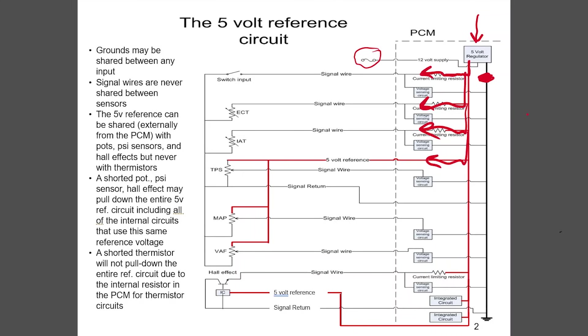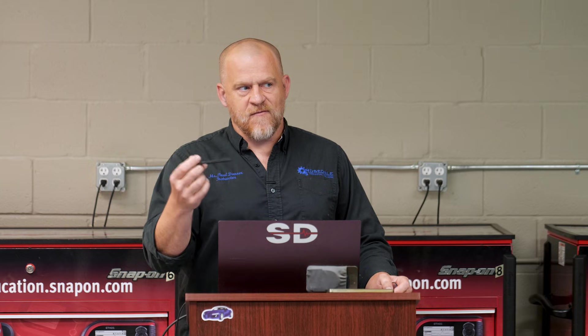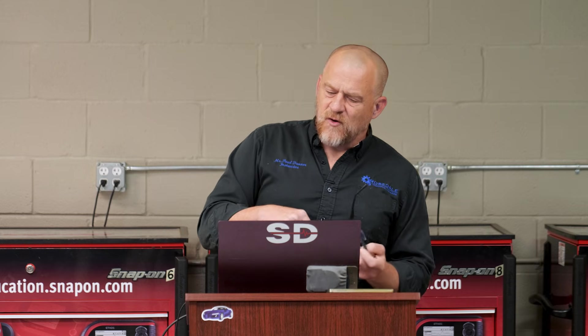Where does that regulator get grounded? It grounds to the board. Where does the board get grounded? It grounds to the block. There would be a main board ground that comes out and grounds externally to the block. I highly recommend watching my chapter 9 playlist — I've taught every single page of the book. Chapter 9 covers the operation of this 5-volt reference circuit in detail. It's really, really important. This is one of those fundamentals that doesn't change.